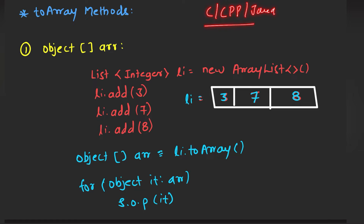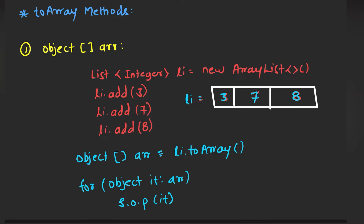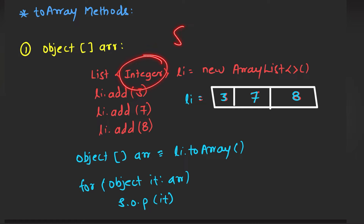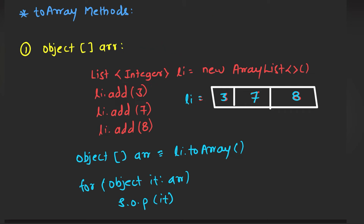we deal with an array which is basically known for its primitive data types called integer, character, or float. We can create arrays of these three data types. But when you're dealing with collections, we're basically having wrapper objects like Integer and String — these are objects. In Java, these are basically treated as an object.